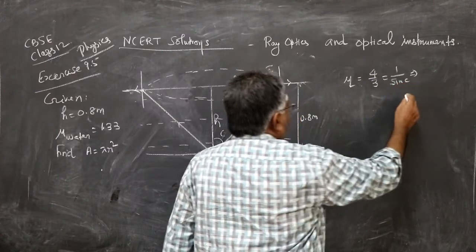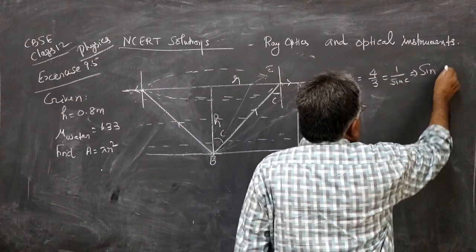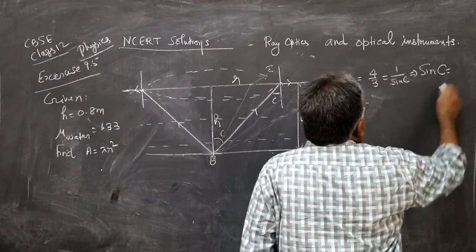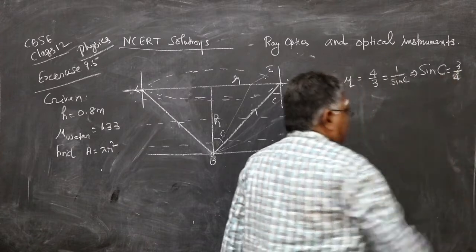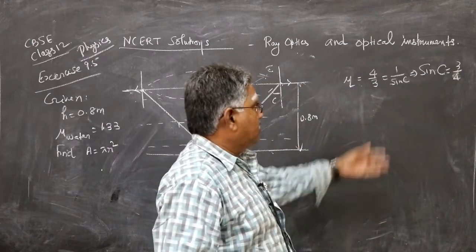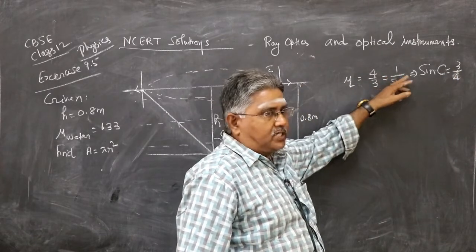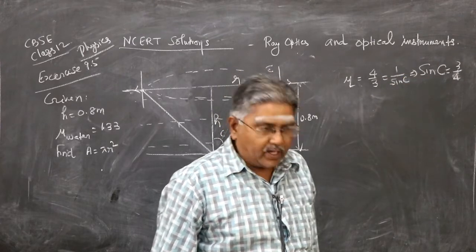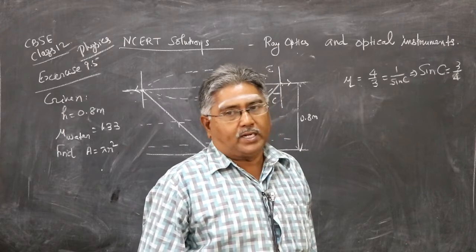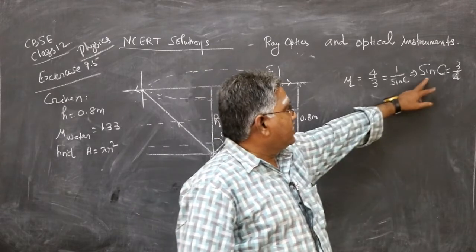Which gives you sine C as 3 by 4. You can check your steps. By any chance, if you wrote 4 by 3 as sine C, then sine C will be 4 by 3. That would be wrong because the value of any sine angle cannot be greater than 1. So now this is right, sine C equals 3 by 4. It is possible.